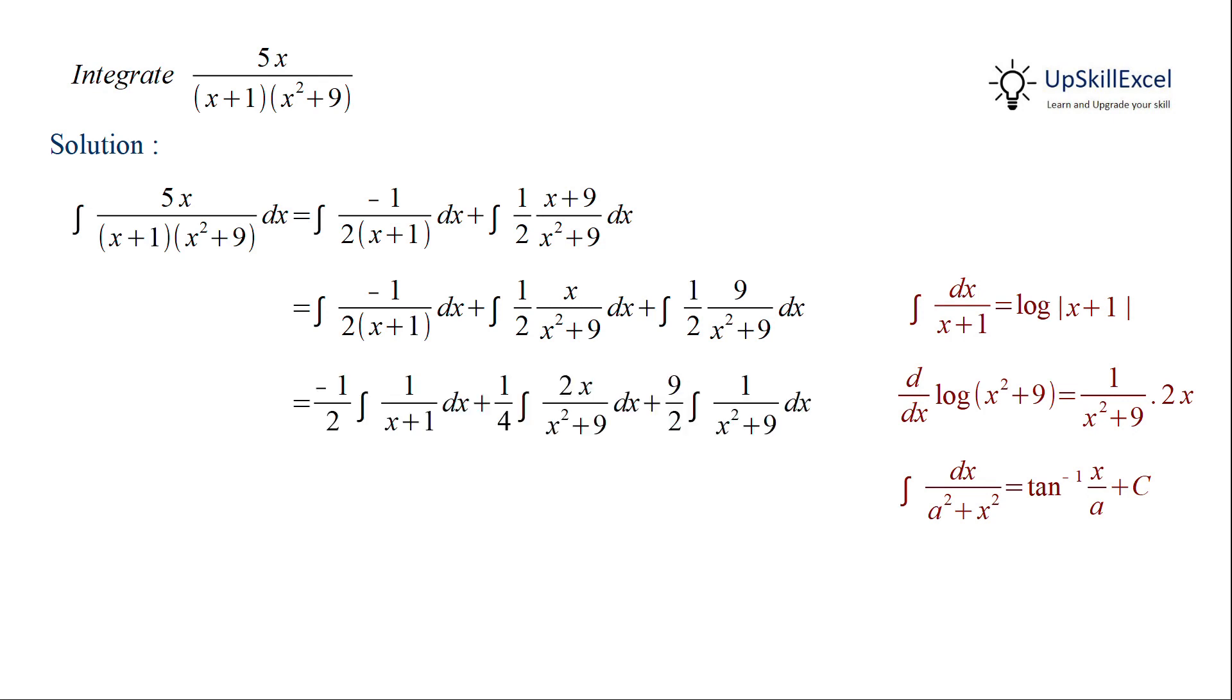So taking all the coefficients outside the integral and writing the second term as 2x over x square plus 9 and then applying the integration we get minus half of log of absolute of x plus 1 plus 1 over 4 log of x square plus 9 plus 9 over 2 multiplied by 1 over 3 which can be further simplified to 3 over 2 tan inverse x over 3.